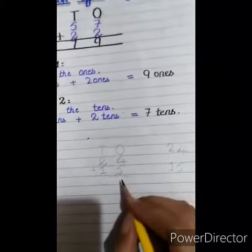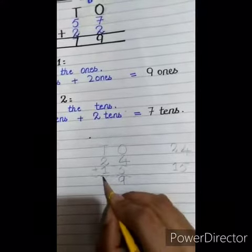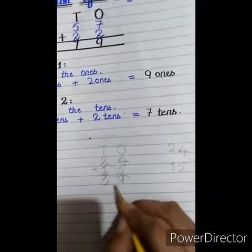That is equal to 9. 2 plus 1, that is equal to 3. So, the answer is 39.